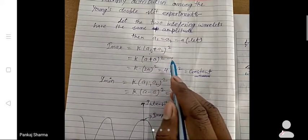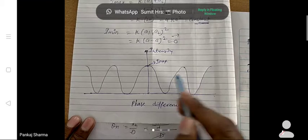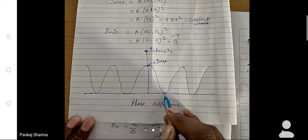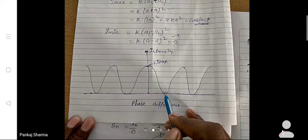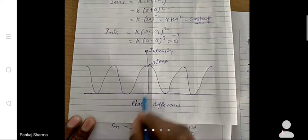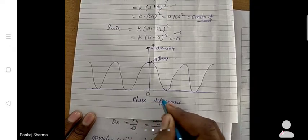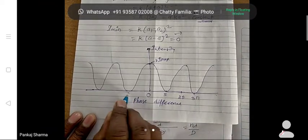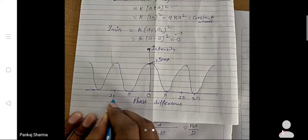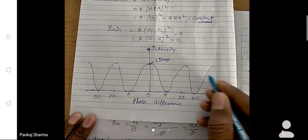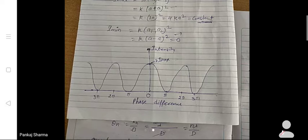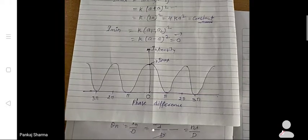So the maximum intensity is where we have a bright fringe, and the minimum intensity is 0 where we have a dark fringe. The intensity remains constant for bright fringes. Taking phase difference: the central fringe is at 0, then π, 2π, 3π, 4π and so on for successive fringes.